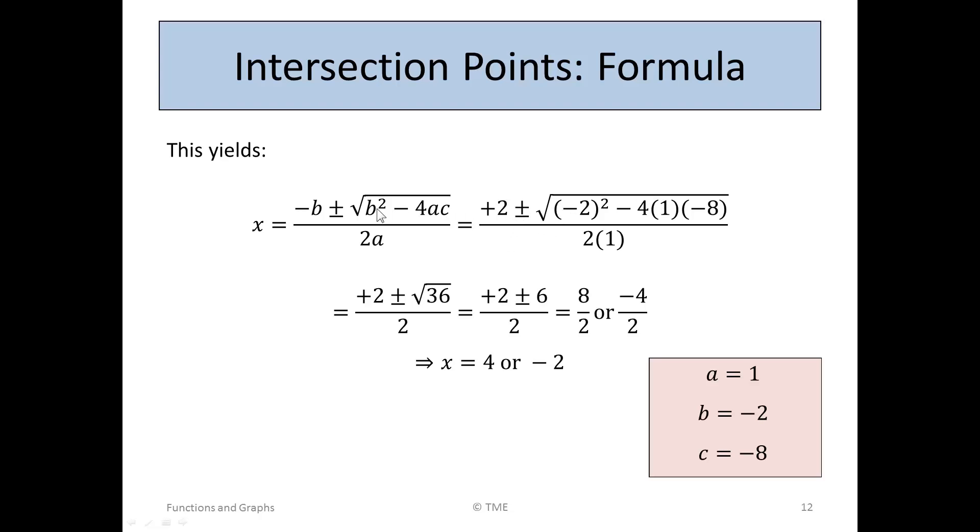Plus or minus the square root of b squared will be minus 2 squared, minus 4 times 1 for a, and c is minus 8, all divided by 2a or 2 times 1.